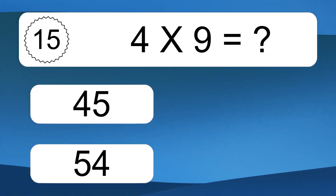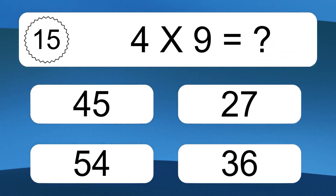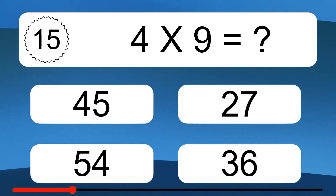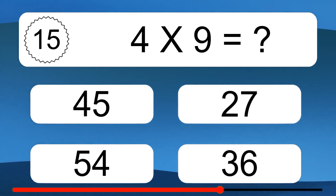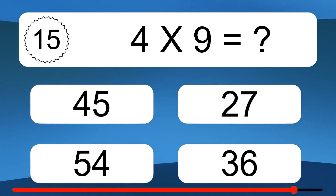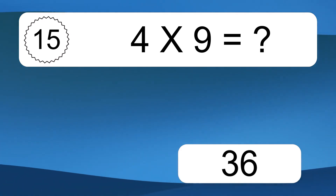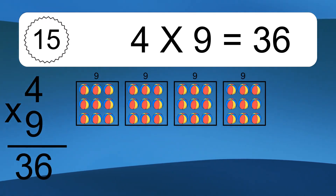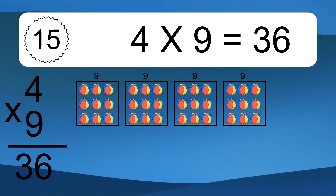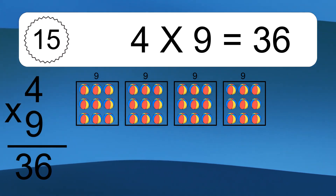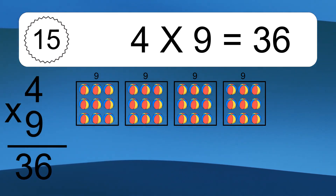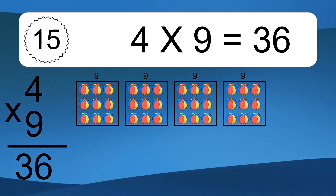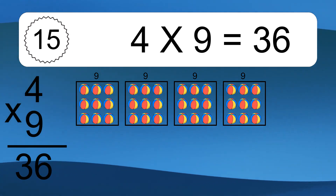4 times 9 equals what? 4 times 9 equals 36. We have 4 boxes and each box has 9 colorful balls inside. If you count all the balls in all the boxes together, you will have 4 times 9 balls. This equals 36 balls.